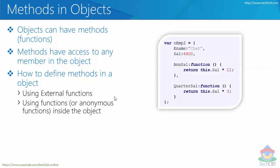You can also have functions made available within the same object using anonymous functions defined directly inside the object. You can write annualSalary as a named function or assign an anonymous function — either behaves the same way. Instead of using external functions, it is better to have methods directly inside the respective object so the code is more readable and you don't have to jump around to find where the function is defined.